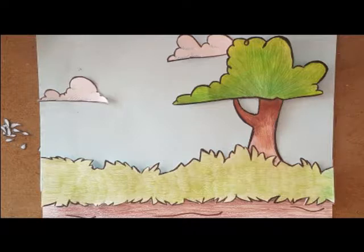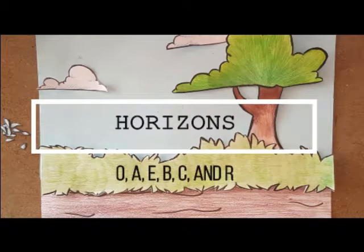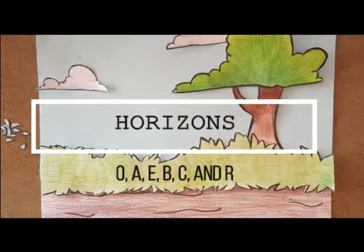The soil is organized in layers that are named horizons: O, A, E, B, C, and R.